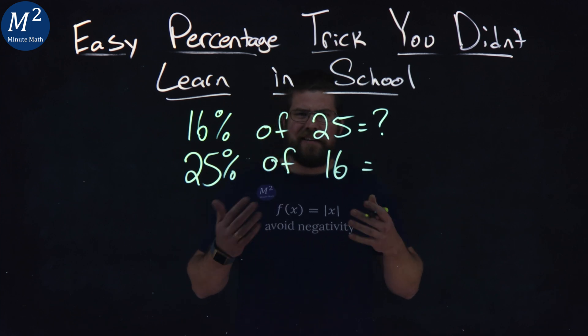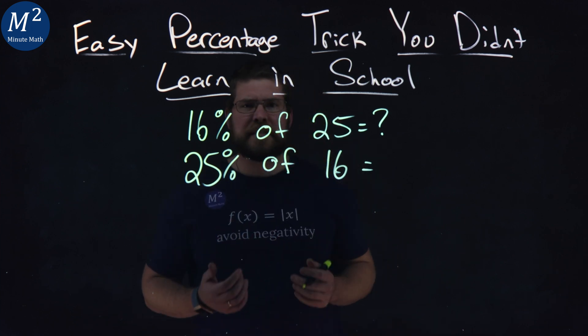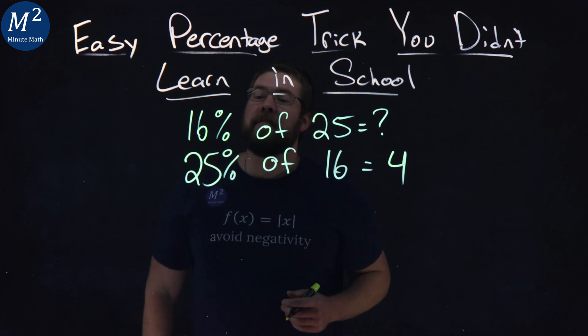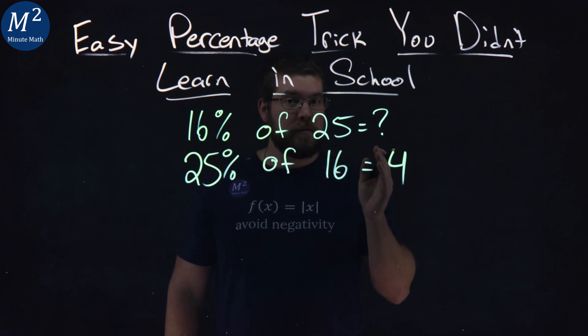Well, 25% is like a quarter, right? One quarter of 16 is just going to be four. And so 16% of 25 is equal to four.